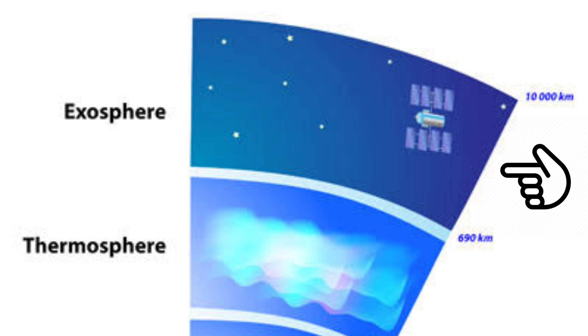The exosphere is the farthest layer. It extends to about 10,000 kilometers above the Earth's surface. Geo is a Greek root which means ground.